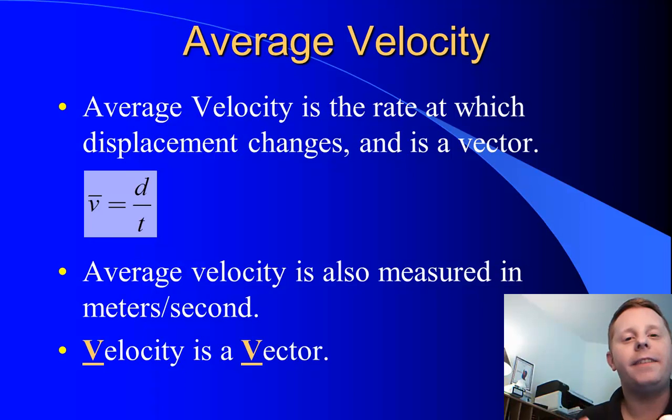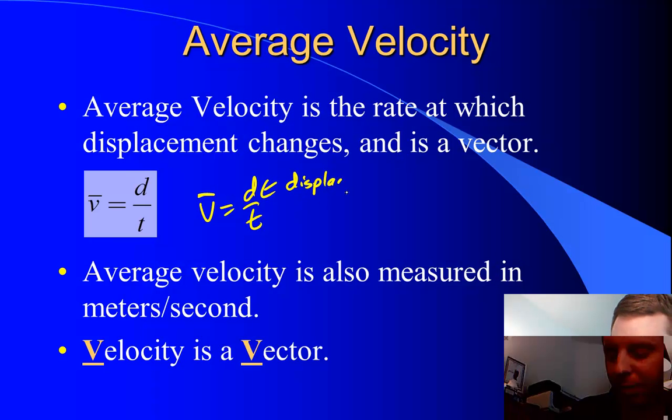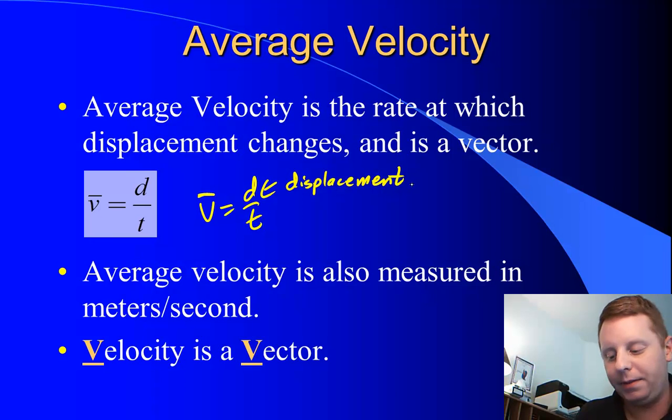Just like we had a vector version of distance, which was displacement, we have a vector version of speed, which is velocity. Average velocity is the rate at which displacement changes, and it's a vector, but it has the same formula again. So V stands for speed or velocity. The line over it means average. If we're asking for average velocity now, D over T, in this case the D must be displacement. If we're looking for velocity, we need a vector in the formula. Average velocity has the same units, meters per second. Velocity is a vector. They both start with V.